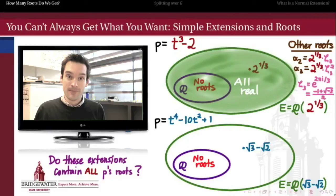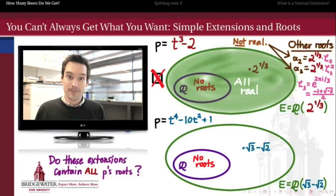But the issue is our extended field Q adjoined 2^(1/3) consists only of numbers which belong to the system of real numbers — in other words, this is a subfield of the reals. But those other roots α₂ and α₃ are not real numbers, and therefore those roots do not belong to this extended field. Therefore, when we extended, we only got one and not more than one root of t³ - 2.